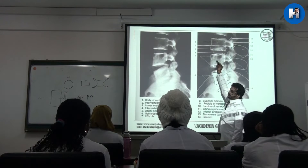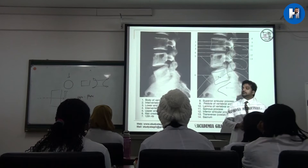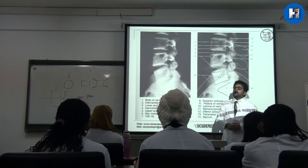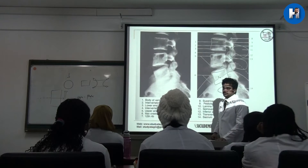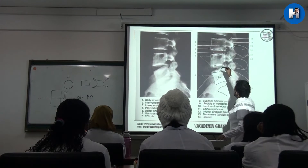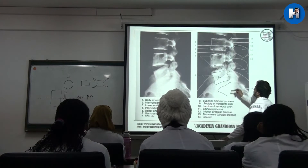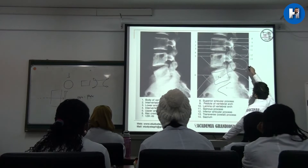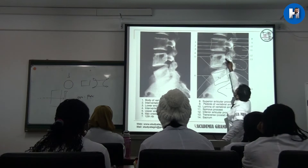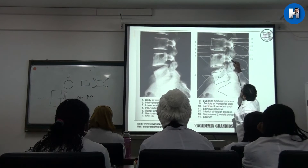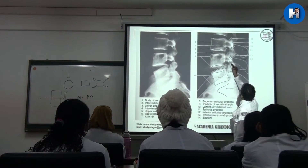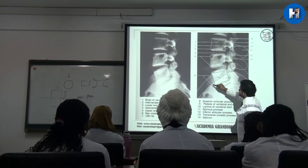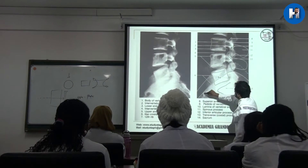When there is avascular necrosis — for example in sickle cell disease or thalassemia — the vertebra will collapse and show the fish mouth appearance. Now behind the disc space you have the pedicle, superior articular process, transverse process, inferior articular process, and lamina. At L5 level you can see the iliac crest crossing — the medial and lateral lips of the iliac crest.